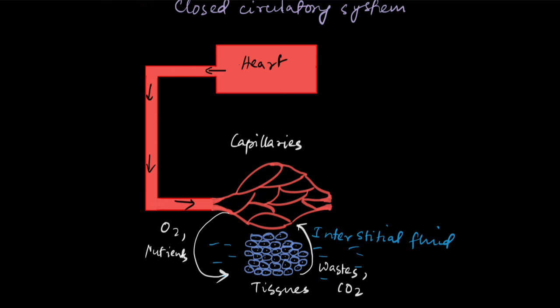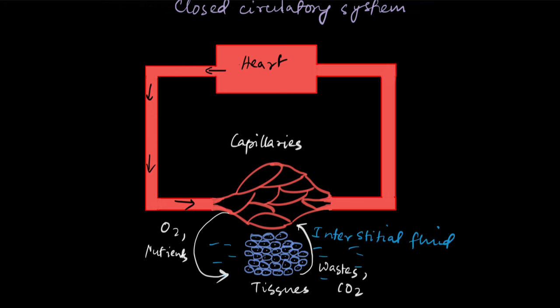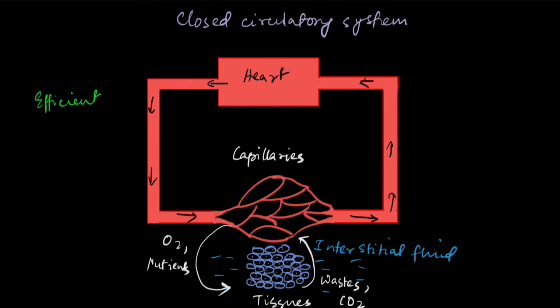This exchange happens through diffusion between the interstitial fluid and the blood in the capillaries. Once the exchange has happened, the blood goes back to the heart through other blood vessels — the capillaries join again to form bigger blood vessels called veins, which carry blood back to the heart. This is how blood circulates throughout all vertebrates. Five to six liters of blood travel through the entire body in less than 20 seconds.